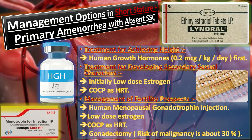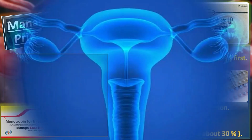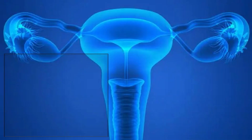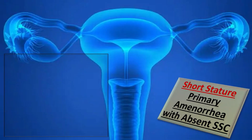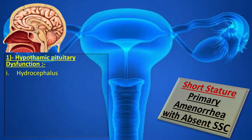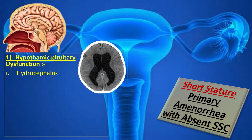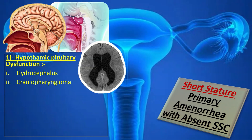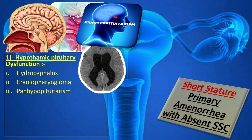Fertility prospects are extremely poor in Turner syndrome and mixed gonadal dysgenesis. These patients are made sexually mature with low-dose estrogen, then given combined oral contraceptive pills as HRT. The gonads in mixed gonadal dysgenesis are removed as the risk of malignancy is about 30%. Hydrocephalus is managed by pediatric surgeons with a surgical drainage shunt; craniopharyngioma by surgery, radiation, and chemotherapy; panhypopituitarism by HRT.